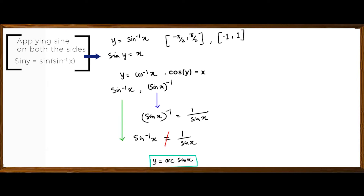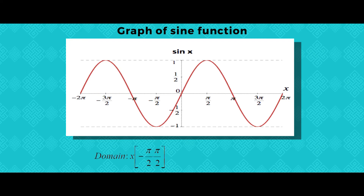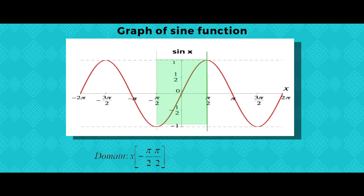Let us move to the graph of the sine function. This is the graph of sine function and it is a periodic function. The sine function will have its inverse only if it is a one-to-one function. We can check this by drawing a horizontal line through the graph — if it touches multiple points, it is not one-to-one. So we impose a restriction to the domain of the sine function to negative π/2 to π/2, and the rest of the graph is removed.